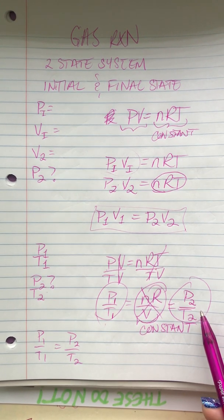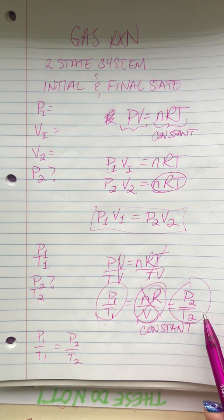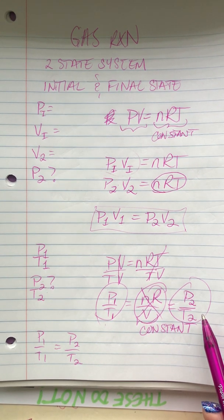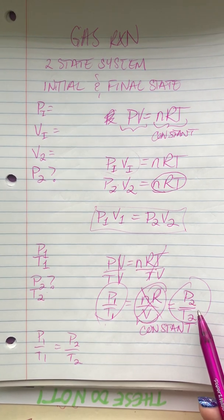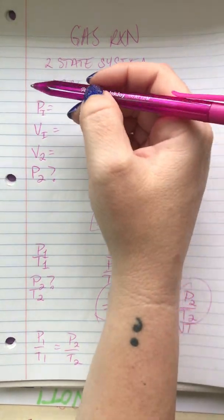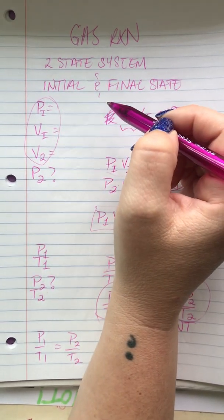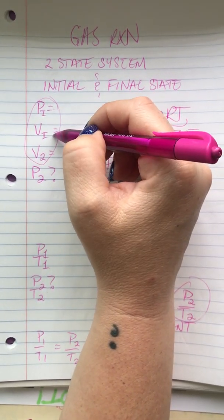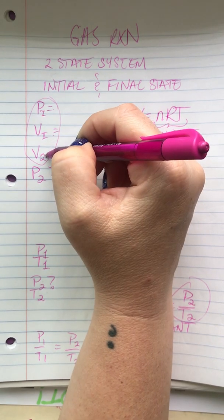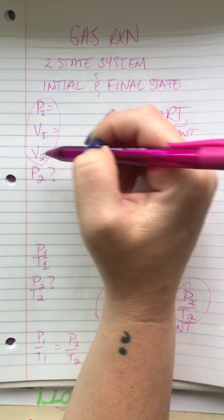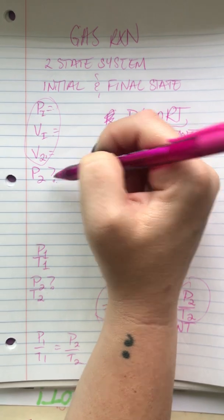If you go through the Chapter 8 homework from the book, you'll see some examples like this, Alex. So again, you just have two states where you're given two variables on one side and one variable from the other side and asked to solve for one of them.